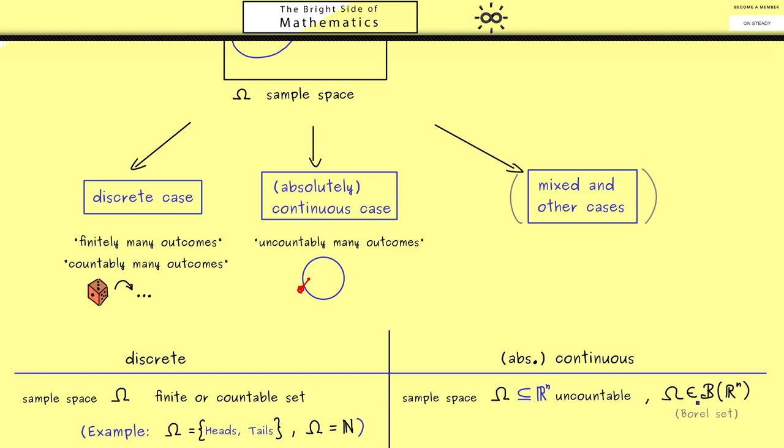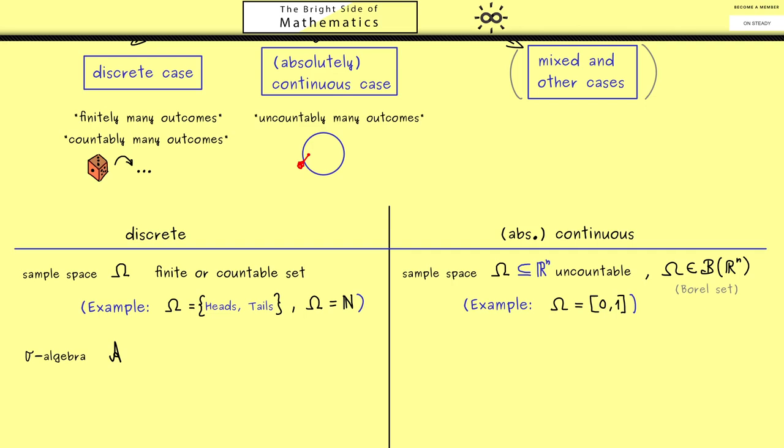To be more precise, omega should be a Borel set, an element of the Borel sigma algebra of R^n. If you don't know what the Borel sigma algebra is, don't worry, I have a whole video about it. However, at least for this video, it's not the most important thing. Just think of a common example: omega could be the unit interval, closed or open. That's what you should know about possible sample spaces.